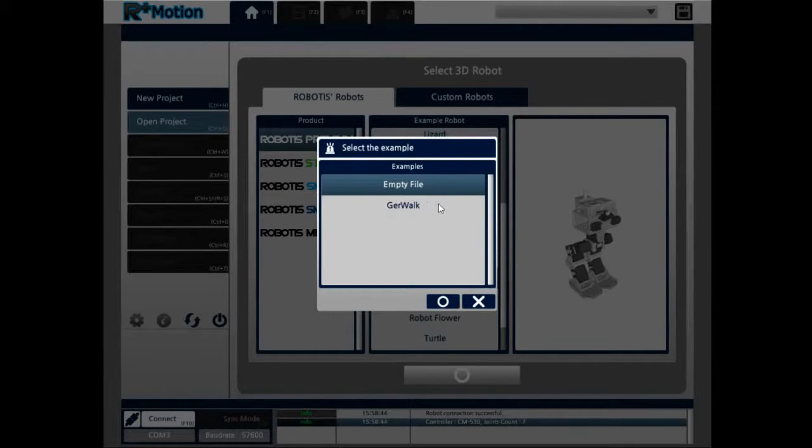There's going to come up a template or example file. We don't want to start from scratch. So let's just select GerWalk and press OK.